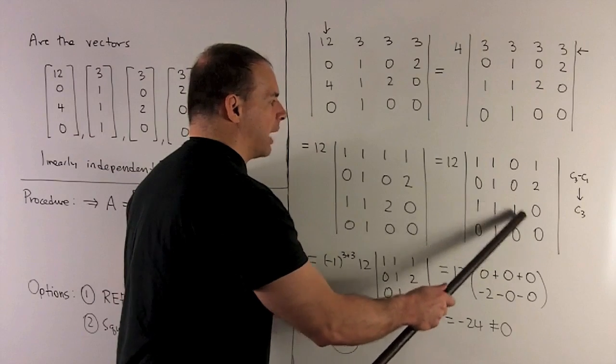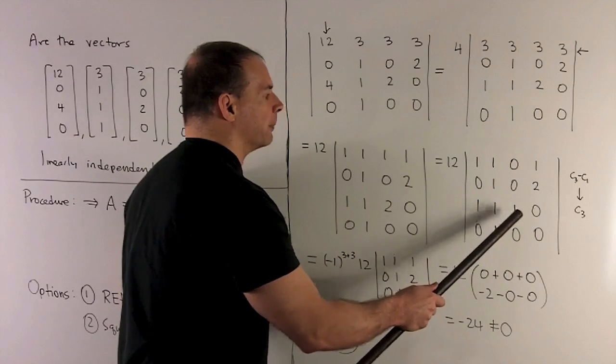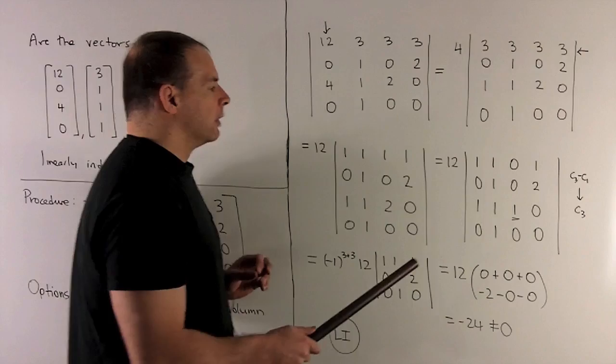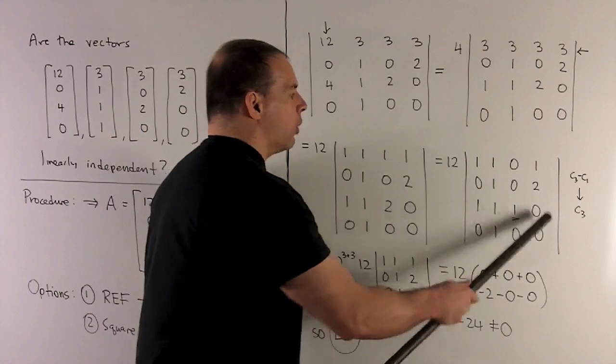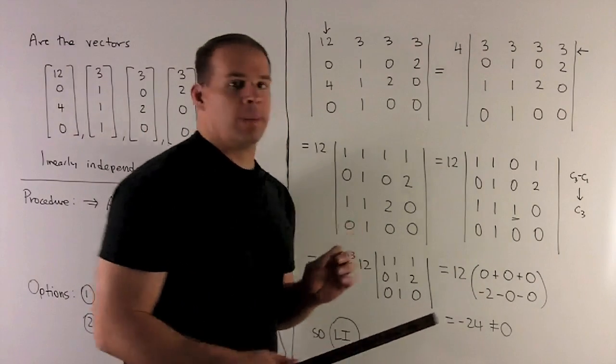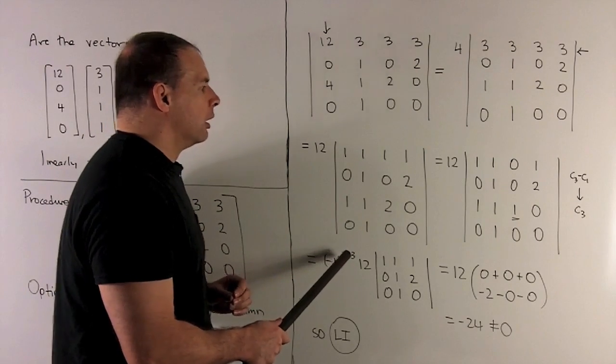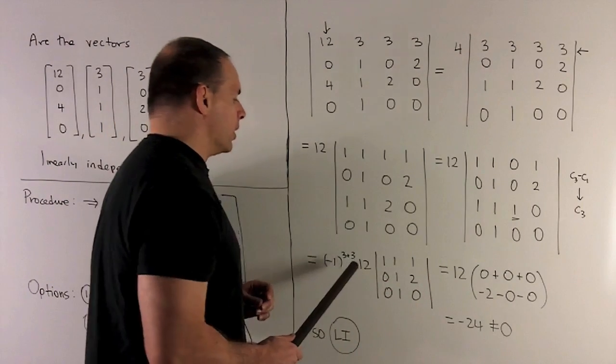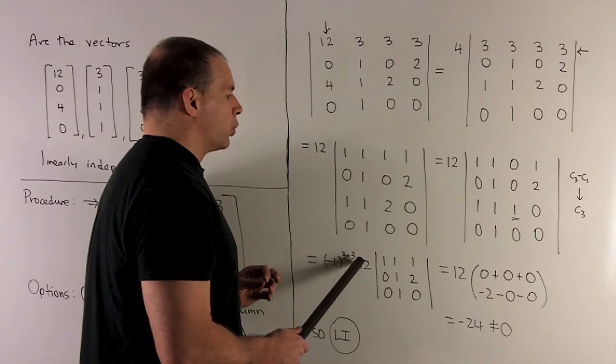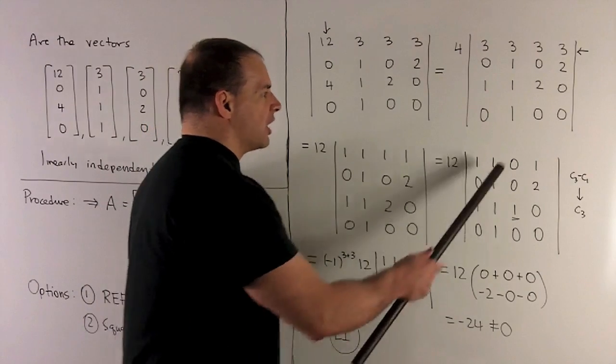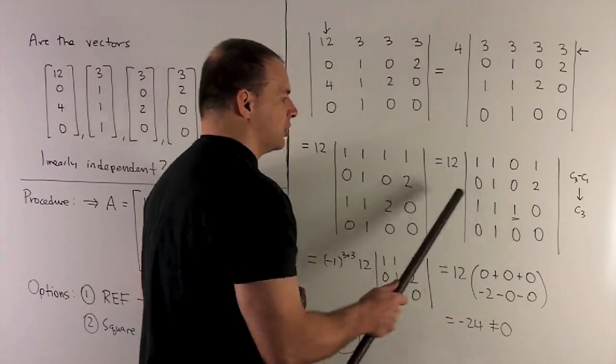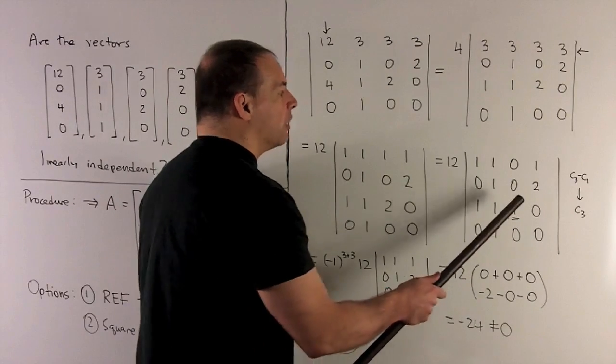Now I can do a cofactor expansion off of this point here. So what's going to happen? We're going to take our row and column number, add them together. So it's three plus three. Take minus one to that power. The one here would come out, but one's not going to do anything. We have the 12. And now I'm going to cancel out the row and column, take the determinant. So we're going to get the minor for this entry.